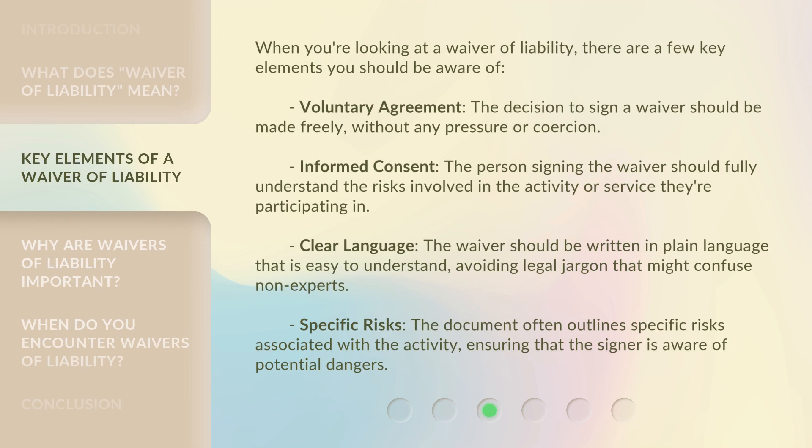When you're looking at a waiver of liability, there are a few key elements you should be aware of. Voluntary Agreement: the decision to sign a waiver should be made freely, without any pressure or coercion. Informed Consent: the person signing the waiver should fully understand the risks involved in the activity or service they're participating in. Clear Language: the waiver should be written in plain language that is easy to understand, avoiding legal jargon that might confuse non-experts. Specific Risks: the document often outlines specific risks associated with the activity, ensuring that the signer is aware of potential dangers.